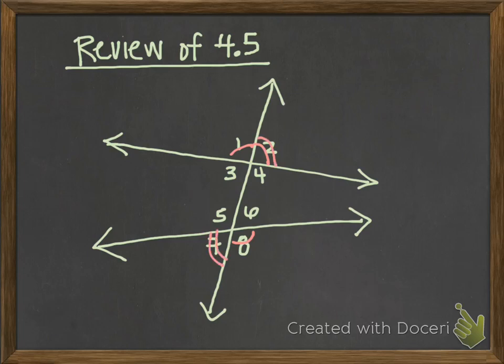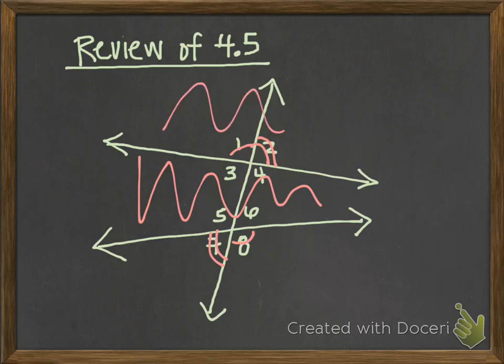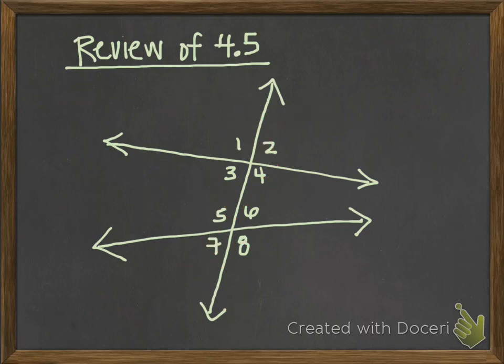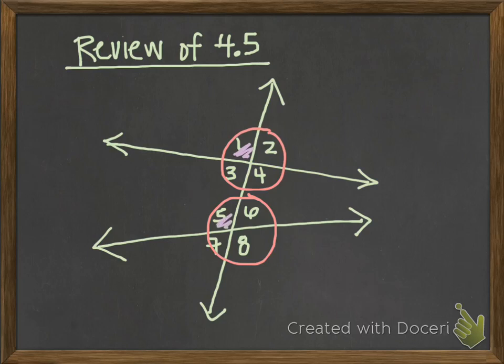Alternate means on different sides of the transversal; interior means within this region; exterior means above or below the two lines. Then we have corresponding angles — angles that are basically in the same position but at different intersections. Some corresponding angle pairs would be 1 and 5, 2 and 6, 4 and 8, and 3 and 7 — so there are four pairs of corresponding angles.